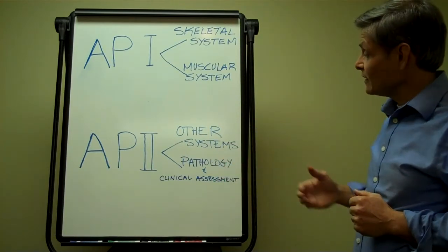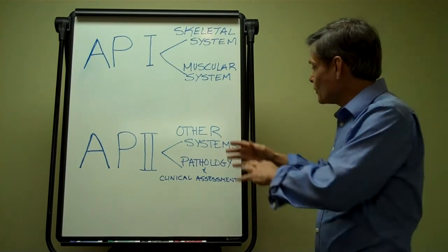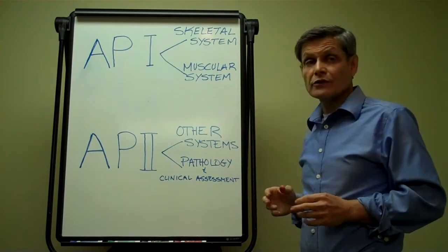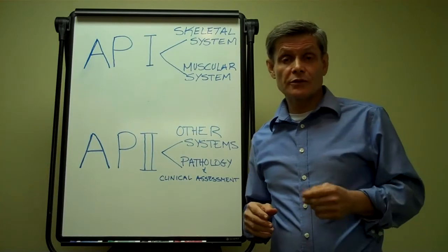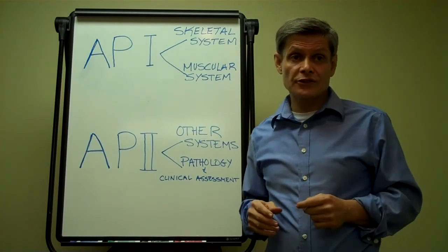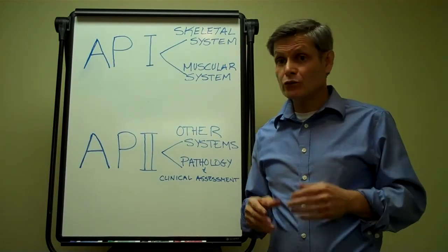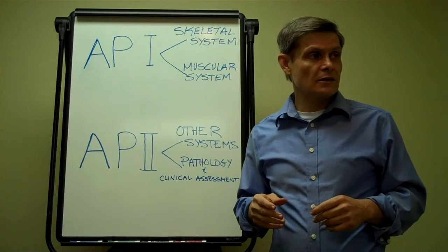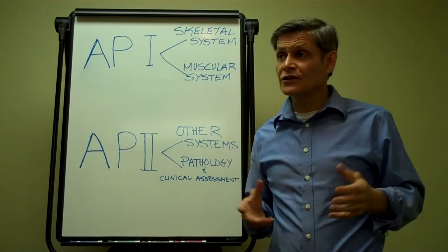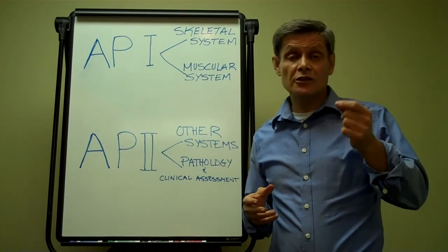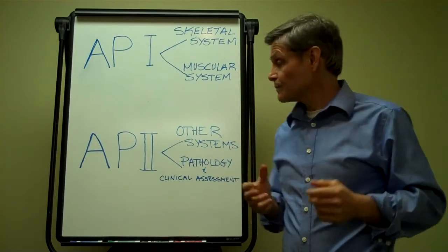And then in Anatomy and Physiology II, we look at all the other systems of the body. We look at the nervous system, the circulatory system, the digestive system, the respiratory system, the endocrine system, the reproductive system, and the integumentary system, which is the body of skin, hair, and nails.